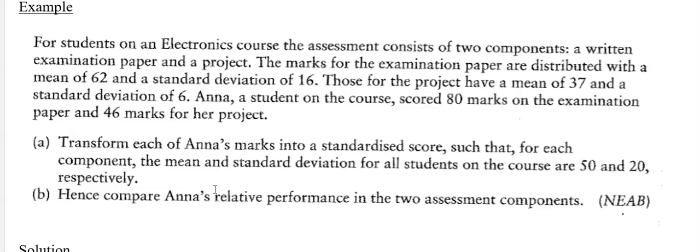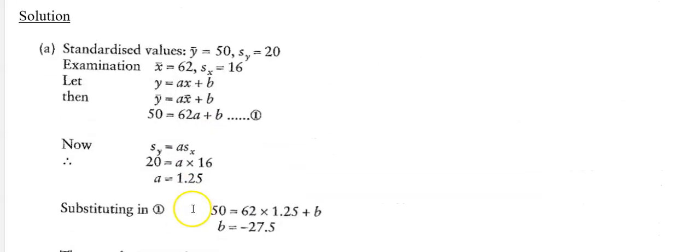Part (i) says: transform each of Anna's marks into a standardized score such that for each component the mean and standard deviation for all students are 50 and 20 respectively. Part (ii) says: hence compare Anna's relative performance in the two assessment components. So we write down the standardized target values: scaled mean y-bar equals 50, scaled standard deviation equals 20. For the examination: x-bar equals 62, standard deviation equals 16.